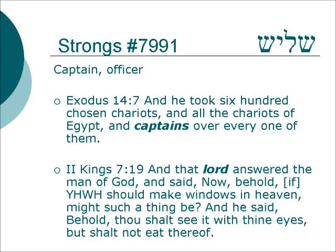Also related to the idea of measurement, there is an upper level officer within the army or within the tribe. Because of his measure of being above his fellows, he is a captain, and that is also the word shalish. Exodus 14:7 — And he took six hundred chosen chariots, and all the chariots and captains over every one of them. In 2 Kings 7:19, this was a person of some level, of some measure or stature within the community, who doubted the prophecy: 'If Yahweh should make windows in heaven, might such a thing be? Behold, thou shalt see it with thine eyes, but shalt not eat thereof.' The man who was standing at the gate, who doubted the prophecy of the prophet of God.